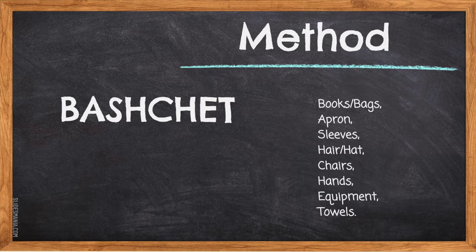C stands for chairs that should be tucked under your table and out of your way. H stands for hands that should be washed properly for 30 seconds using hot water and soap. E stands for equipment, which you should get out as quickly as possible without wasting time. T stands for towels — you need at least two dishcloths and two tea towels.